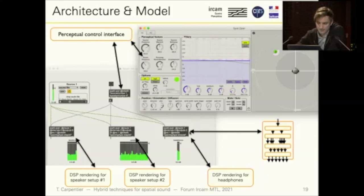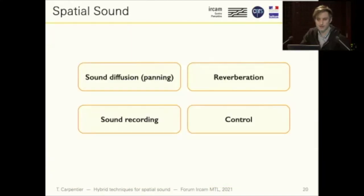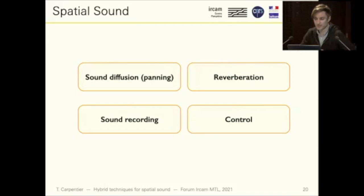The signal processing engine — the SPAT tilde object — contains the whole processing chain discussed earlier. The modules are also available separately if you want to combine them for different usage or alternative implementations. Thanks to this framework, the SPAT engine is able to cope with the main aspects of spatial sound: sound diffusion, panning, reverberation, sound recording, and control or spatial composition. These will be the four main topics of my talk today.